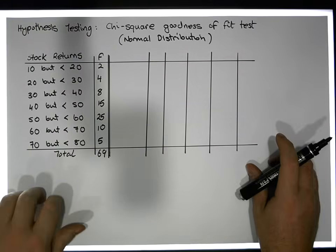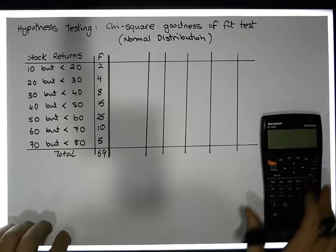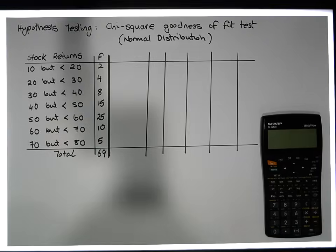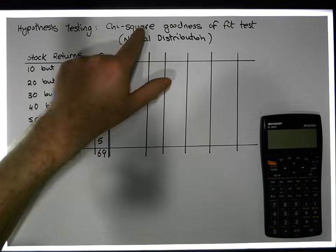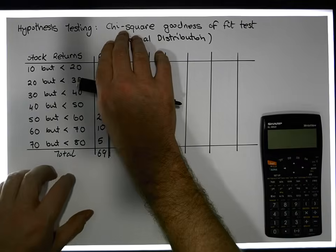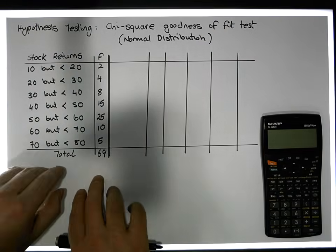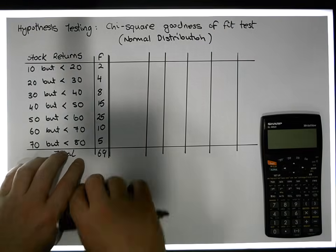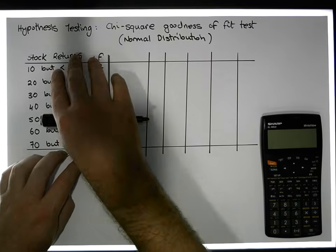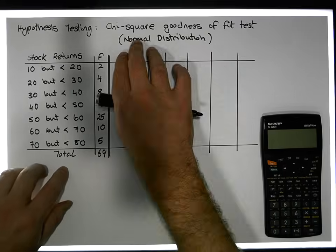Hi guys, this is Jonathan Lambert with the Mathematics Development and Support Service at the National College of Ireland. This short video is another in our series dealing with hypothesis testing — specifically another video on the chi-squared goodness of fit test. We're going to use the chi-squared goodness of fit test to see whether some observed distribution fits a predefined distribution, and in this case, whether there is evidence to suggest that the observations fit a normal distribution.